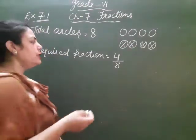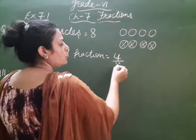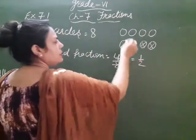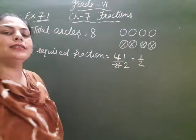But we can convert it into lowest terms. 4 divided by 2 is 2, 8 divided by 2 is 4. We can write it as 1/2. Means half of the circles have cross in them. Clear?